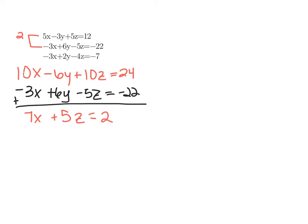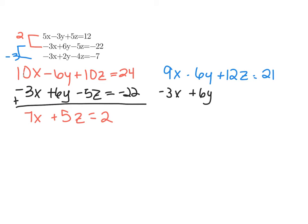Now I need to eliminate the same variable Y from another two equations. I'm going to choose the bottom two equations. To eliminate my Y's, I'll multiply the bottom equation by negative 3, giving me positive 9X minus 6Y plus 12Z equals positive 21. The middle equation stays as negative 3X plus 6Y minus 5Z equals negative 22. Combining these, the Y's eliminate, and I get 6X plus 7Z equals negative 1.